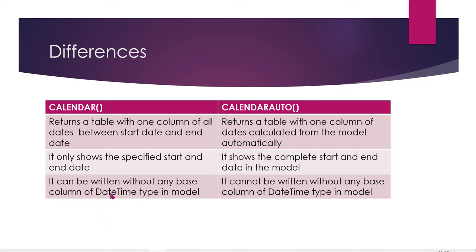Calendar Auto can be written without any base column of date-time type in the model — there is no base column of date-time type in the model. The start and end date: the Calendar Auto function is completely dependent on the date data type. This is the start and end date-time type in the model.